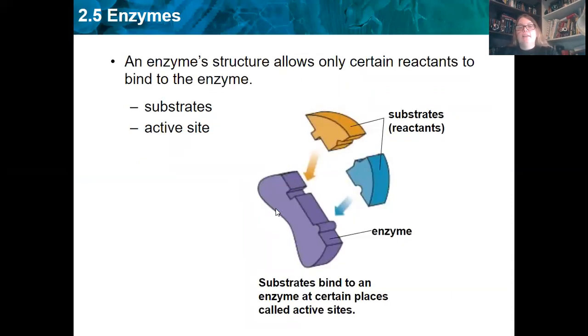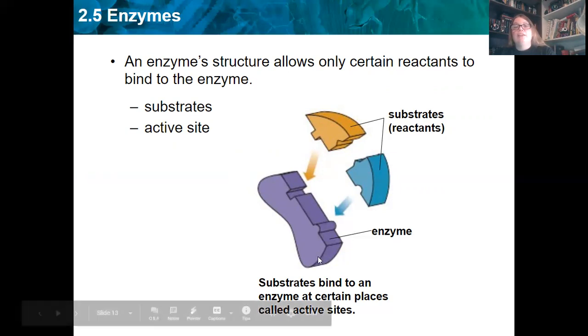So this lock and key model right here, this is going to be on your test, and you're going to have to label it. So I'd suggest getting real familiar real quick with this. So the things that go on the enzyme, the reactants, are called substrates. So these things, the two pieces up top, those are substrates. Maybe I want to put together two different molecules of sugar to try to make a starch. They will lock on to a specific place on that enzyme. Those places are called active sites. So those places where the substrate attaches is an active site.